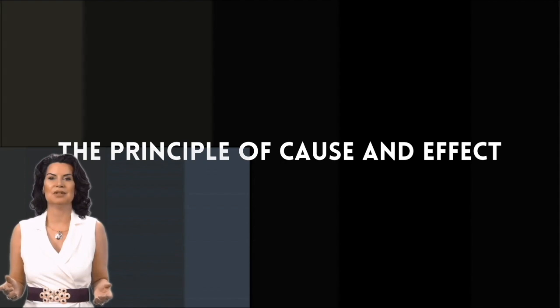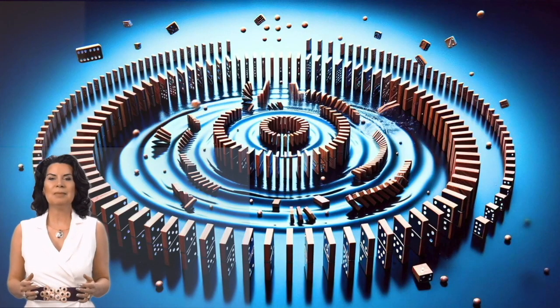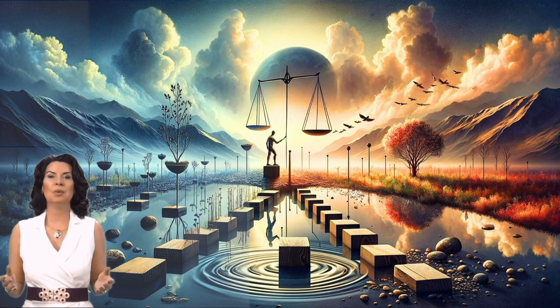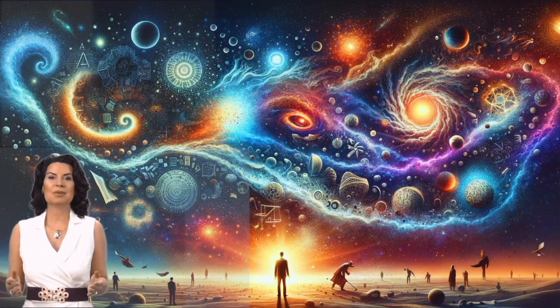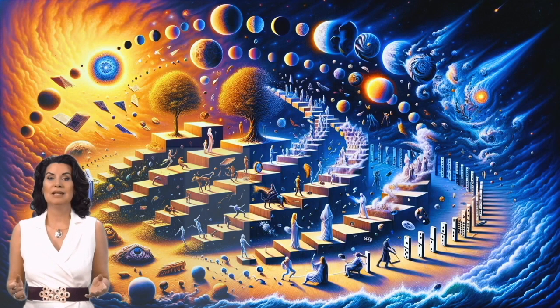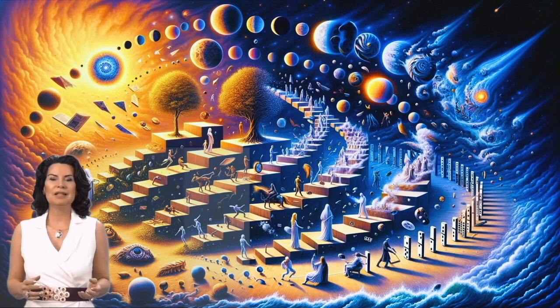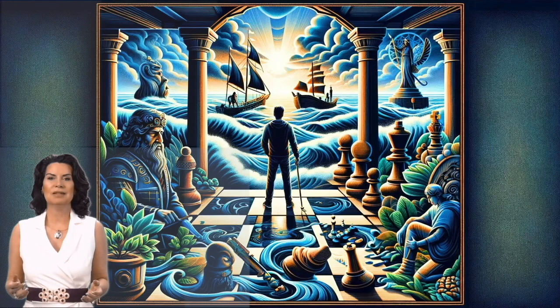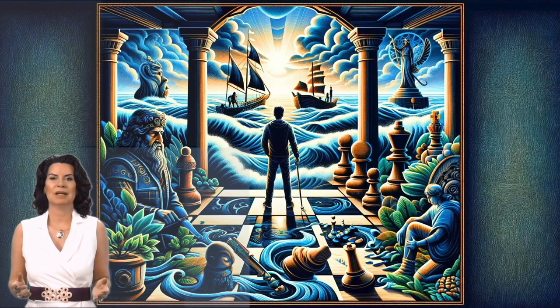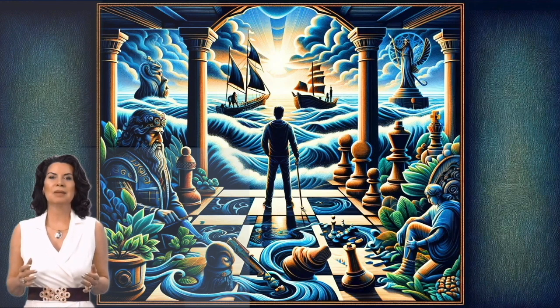The principle of cause and effect. The principle of cause and effect states that every cause has its effect. Every effect has its cause. Everything happening according to the law of chance is but a name for a law not recognized. This principle asserts that nothing in the universe happens by chance. Every event, every action and state of being stems, originates from something preceding it.